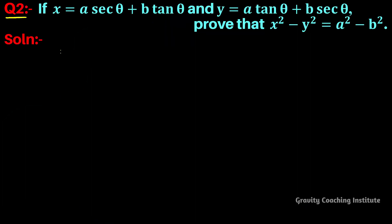Question number two: if x equals a·sec θ + b·tan θ and y equals a·tan θ + b·sec θ, then prove that x² - y² = a² - b².